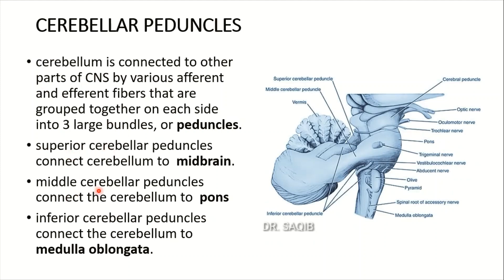These are the superior, middle, and inferior cerebellar peduncles. They respectively connect the cerebellum — shown in the picture with the red laser — to the corresponding parts of the brainstem from up downwards: the midbrain, the pons, and the lower most part, the medulla oblongata. The superior cerebellar peduncle connects the cerebellum with the midbrain, the middle cerebellar peduncle connects it with the pons, and the inferior cerebellar peduncle connects it with the medulla oblongata.